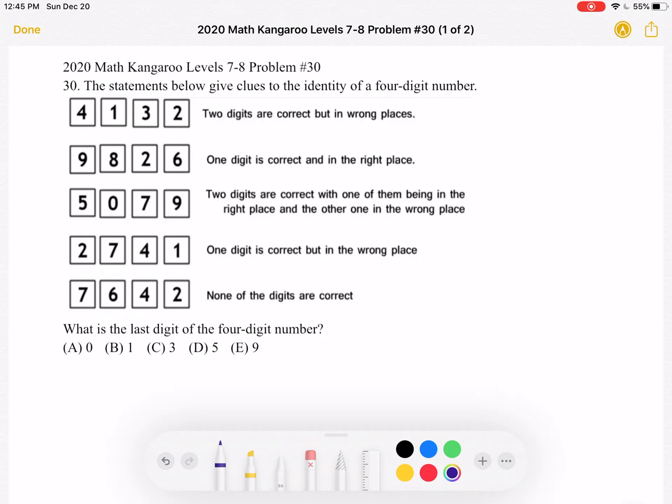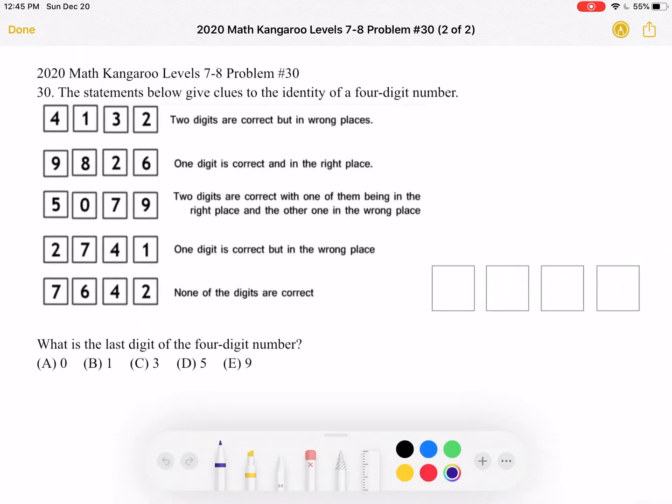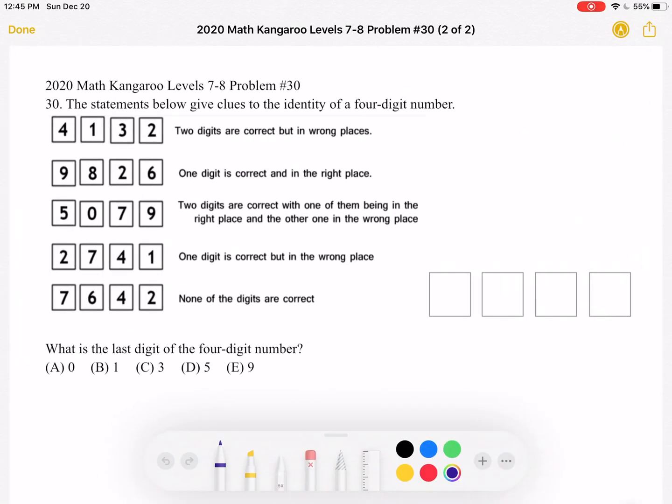This is the problem as it originally appeared on the test and here is where we will be doing the solution. Let's start by looking through all of our clues. First, we have two digits are correct but in the wrong places. One digit is correct and in the right place. Two digits are correct with one of them being in the right place and the other in the wrong place. One digit is correct but in the wrong place. And finally, none of the digits are correct.